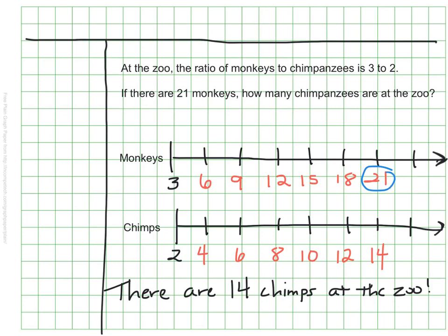with 14 chimpanzees. So I can see visually here that there are 14 chimpanzees at the zoo if there are 21 monkeys.